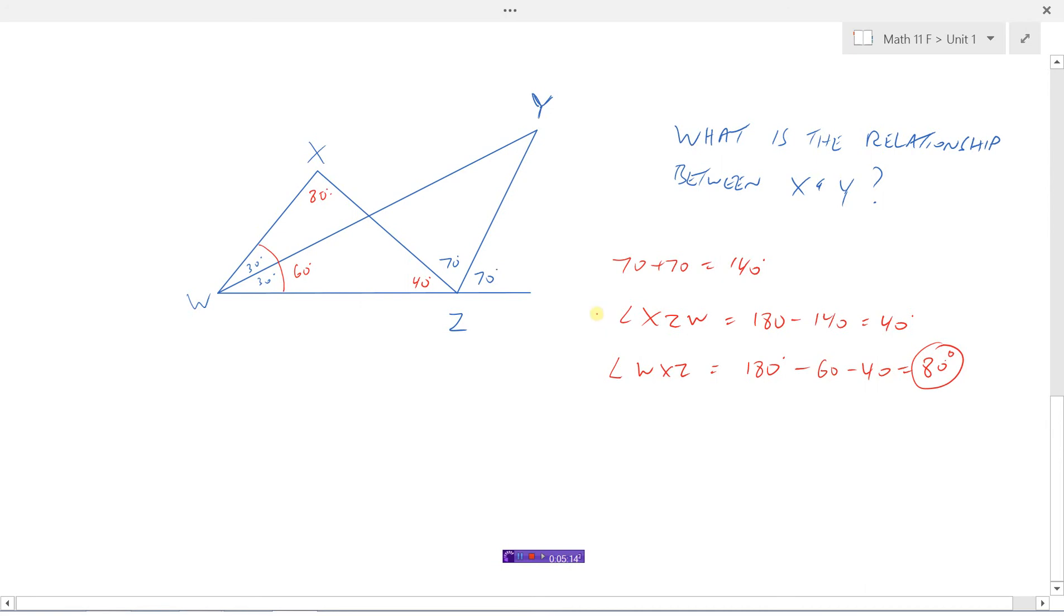So we still need to find angle Y here. And, oh look, we have another triangle right here. So in this triangle, let's just draw this out here again. This triangle is 30 degrees. In this angle here, rather, that angle is 30 degrees.